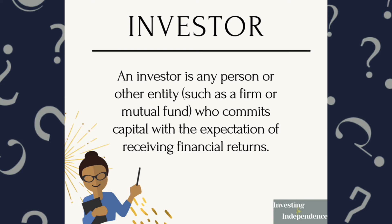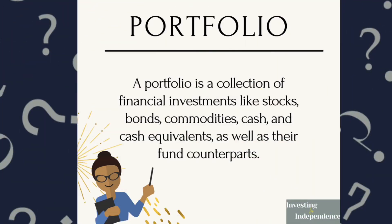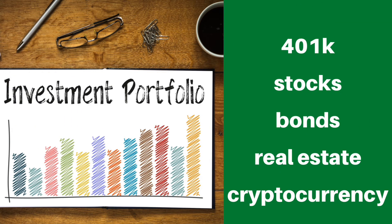Once you become an investor, you have a portfolio. A portfolio is a collection of financial investments like stocks, bonds, commodities, cash, and cash equivalents. It is the total sum of all of your investments and assets. These may include your 401k, stocks, bonds, real estate, and cryptocurrency. In case you're wondering what cryptocurrency is, we have a video on our channel just for you — check out the top cryptocurrency terms for beginners.